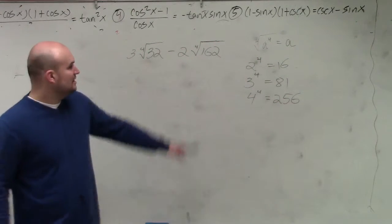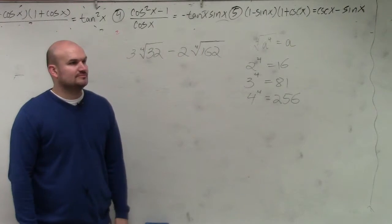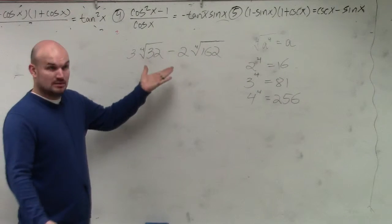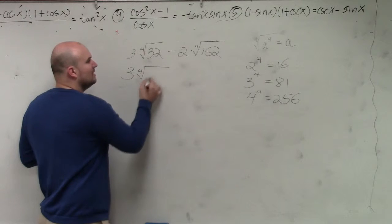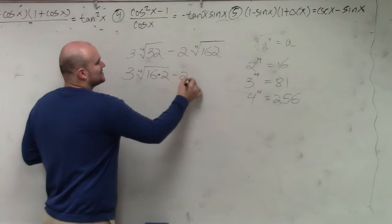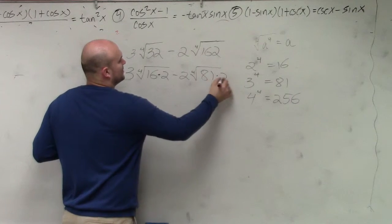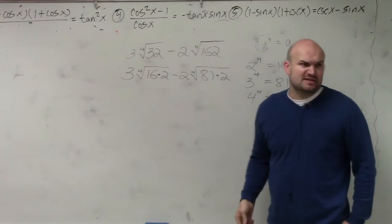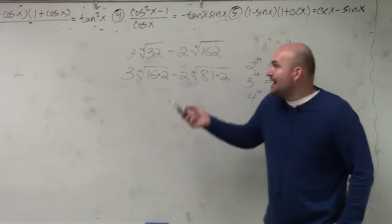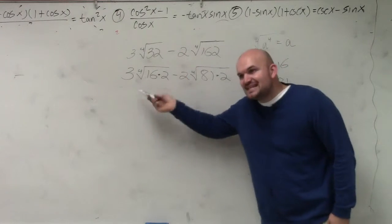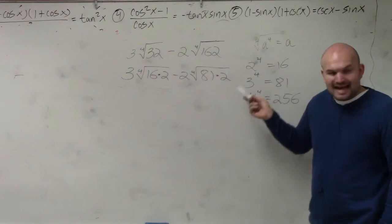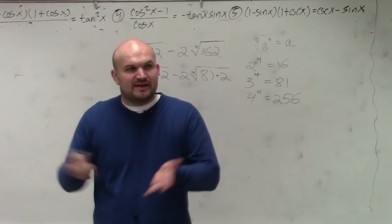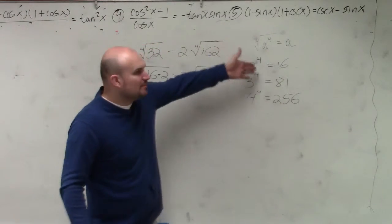So, are either of these numbers — 32 or 162 — quartic numbers, numbers to the 4th power? No. But can I divide quartic numbers into them? Yes, of course. I can break 32 down as 16 times 2, and 162 as 81 times 2. And the reason why I want to use 16 times 2 is because 16 is a number you can raise to the 4th power. 8, you cannot raise a number to the 4th power to give you 8. So I'm not just picking random numbers that multiply to give you 32 — I'm picking numbers that you can raise to the 4th power.